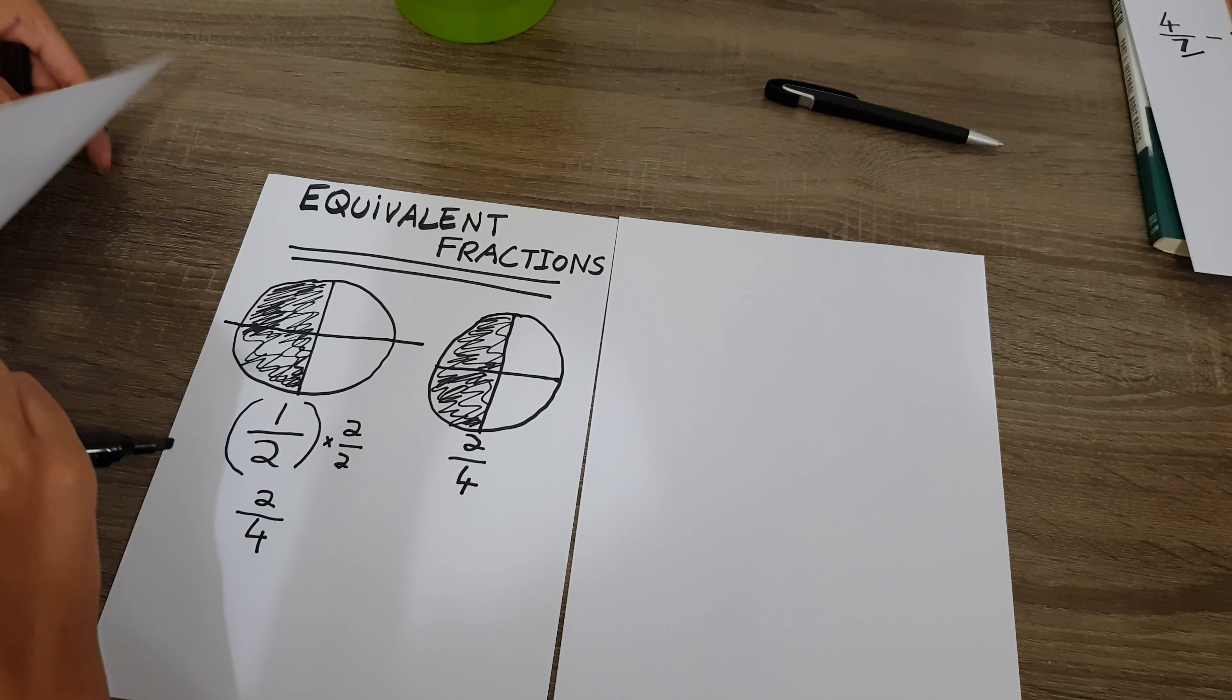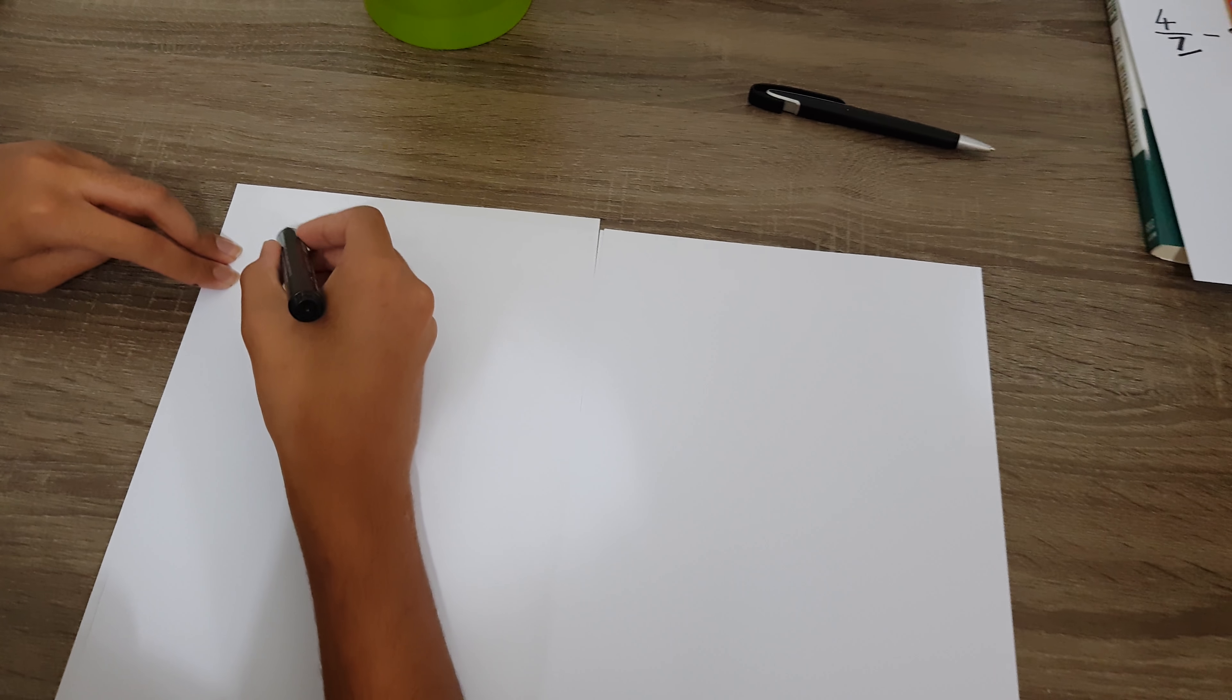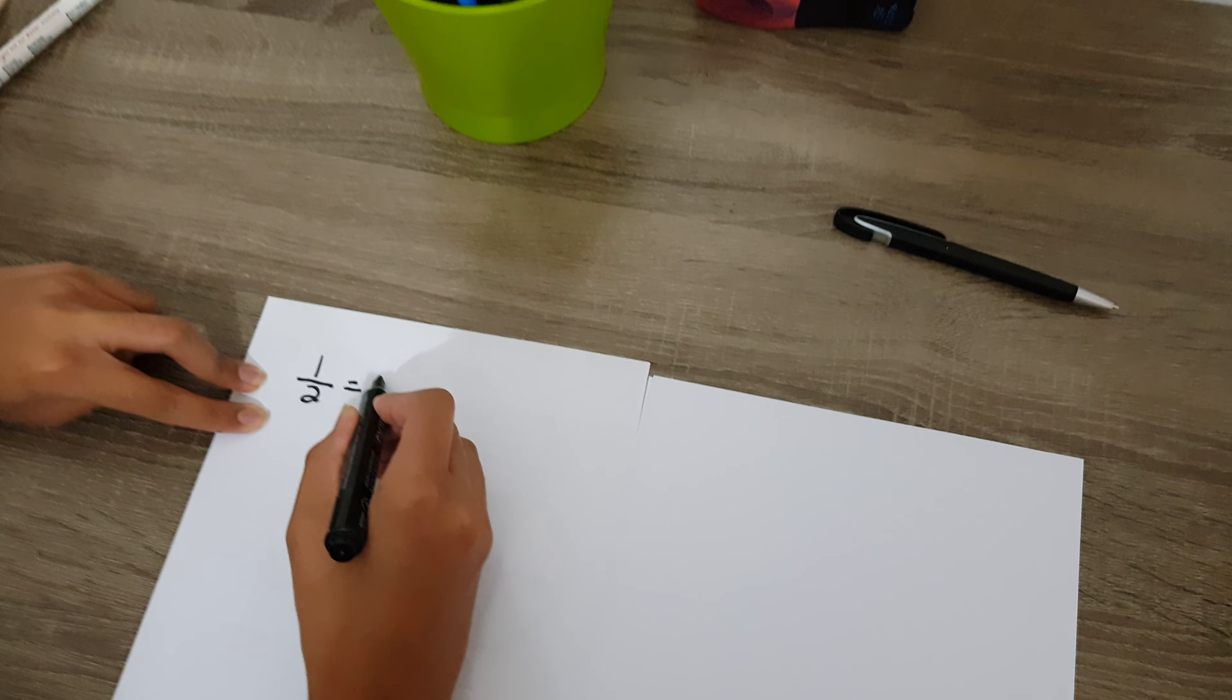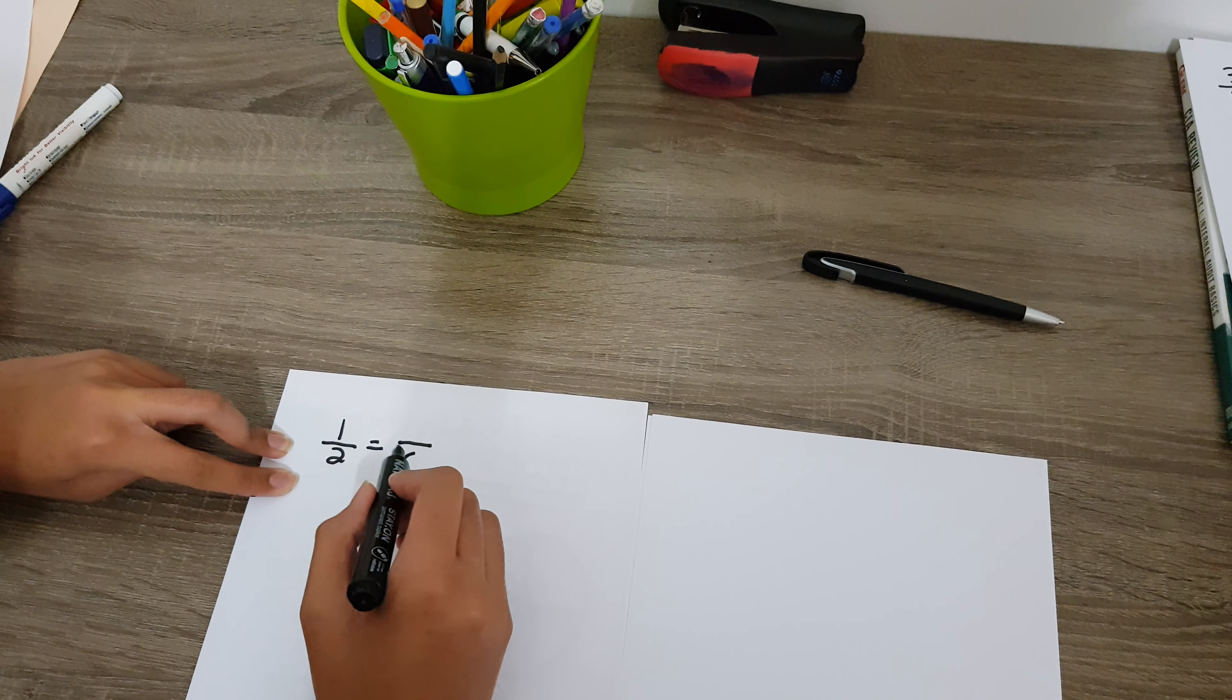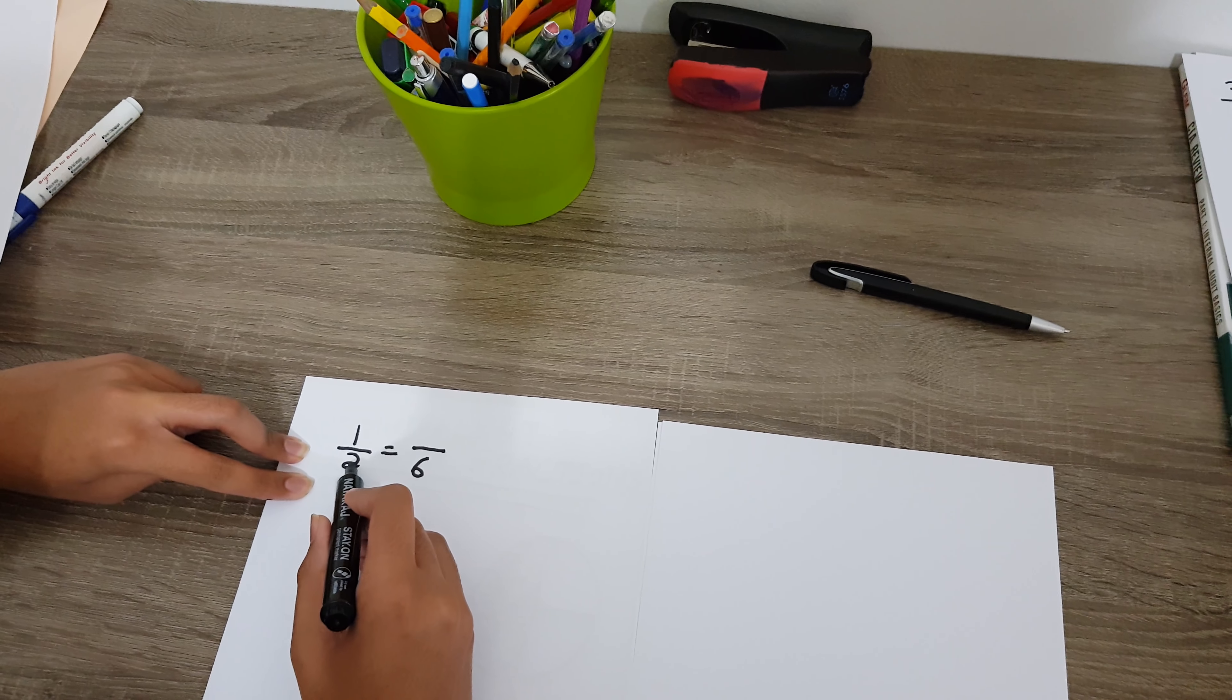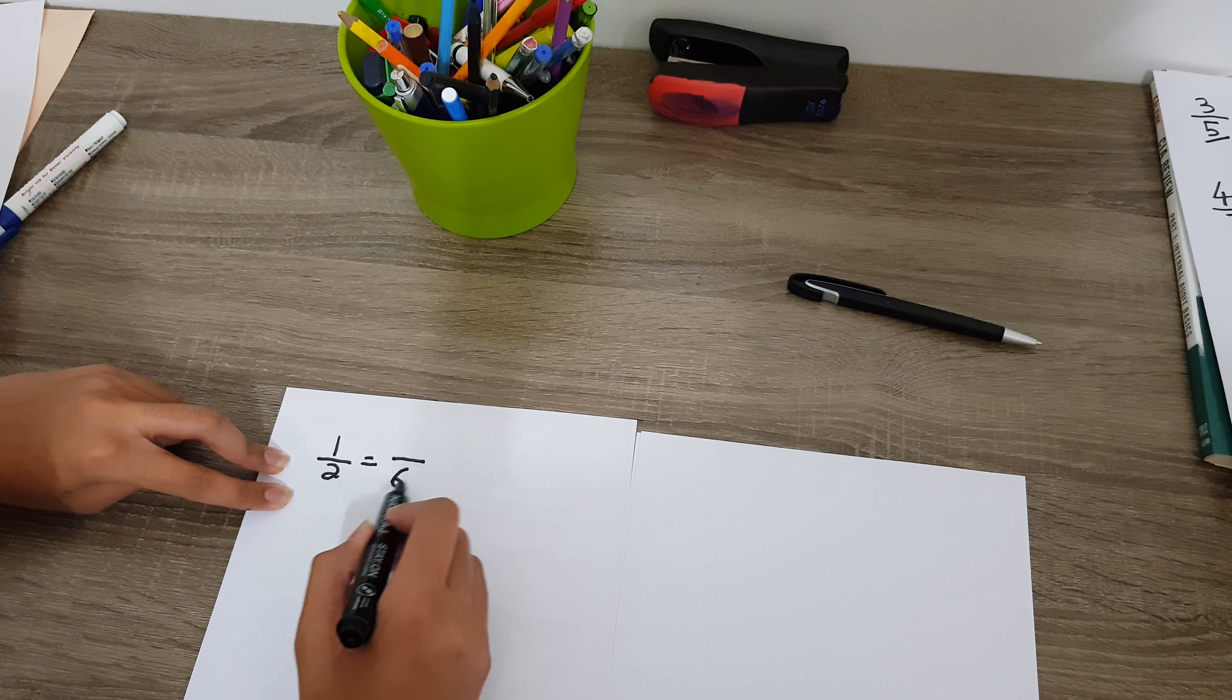So suppose in an exam, you will get a question like this: one over two is equal to something over six. So now we need to know what is the equivalent fraction that has the same value, but the denominator is six. We first need to check what is the relationship between the denominator of the first fraction and the second fraction.